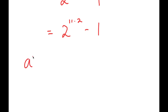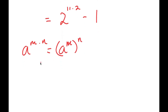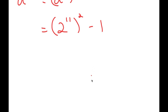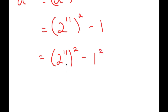If I have something in the form a to the power of m times n, this is equal to a to the power of m to the power of n. So, 2 to the power of 11 times 2 is equal to 2 to the power of 11 to the power of 2 minus 1. Now, 1 is the same thing as 1 squared, so now I have 2 to the power of 11 to the power of 2 minus 1 squared.